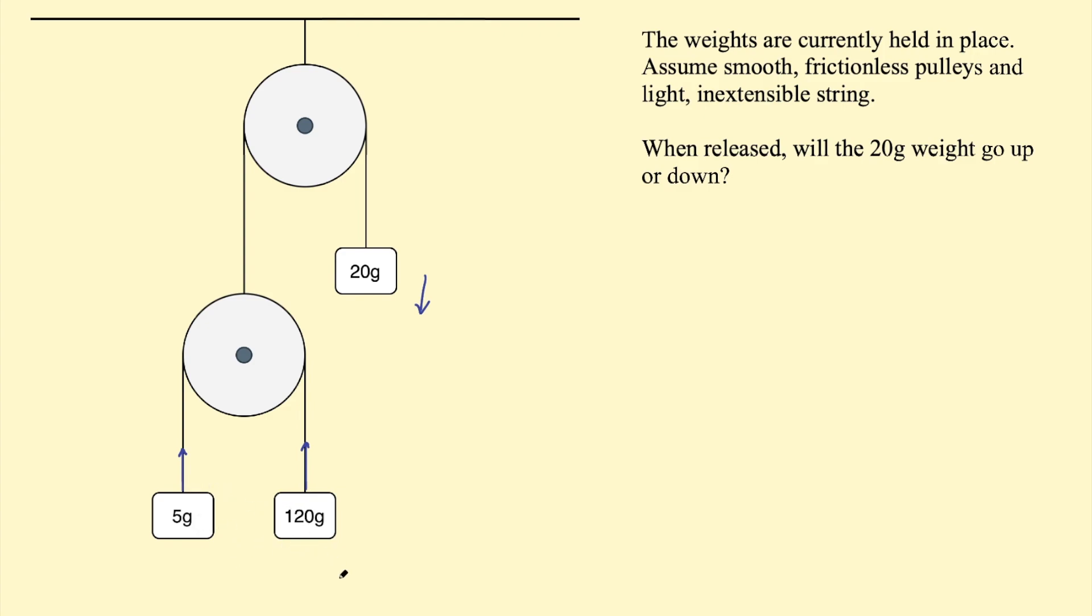Also, we have acceleration, which is going to be acting down, or sorry, the net force, which is mass times acceleration. And on the 5 gram weight, that will be acting up, so the direction of movement. And then we have the weight of each mass. And that is pulling towards the ground. So this is the tension force, this is the net force, and this is weight. So mass times the gravitational acceleration, G.